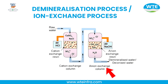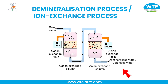When this water is passed through the anion exchange column, the OH⁻ ions present in the anion exchange resin get exchanged with the sulfate and chloride ions present in the water. The water coming out of this column is free from both cations and anions. This water is called demineralized water, and is also called deionized water.